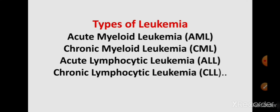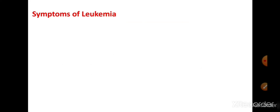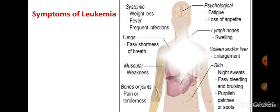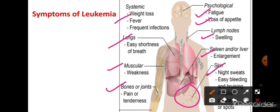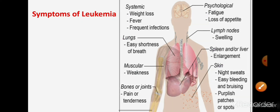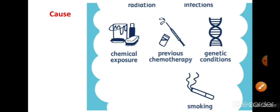Symptoms of leukemia: कुछ basic symptoms हैं जैसे fatigue, loss of appetite, lymph nodes में swelling और lumps। Spleen या liver enlarge हो जाता है, skin में patches दिखाई देते हैं, night sweats होते हैं, bones और joints में pain रहता है, muscles में weakness होती है, breathing में problem होती है, weight loss और fever — ये basic symptoms दिखाई देते हैं leukemia में।